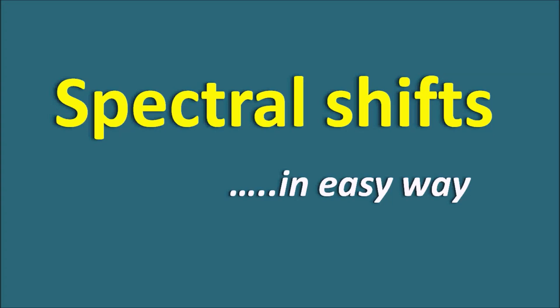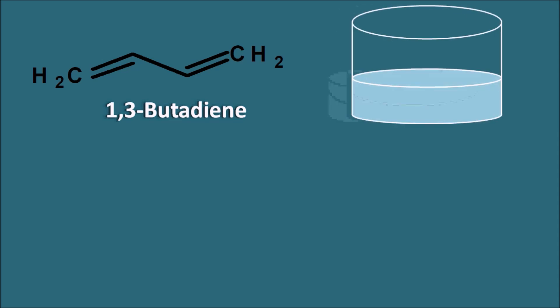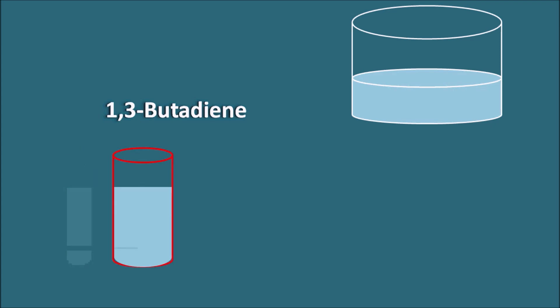Spectral shifts made easy. Let us take a simple compound like 1,3-butadiene. If this 1,3-butadiene is dissolved in a suitable solvent and placed in a spectrophotometer, and we send electromagnetic radiation with intensity I0, this radiation can pass through the solution and come out as It, where It is the intensity of the transmitted light. The solution absorbs electromagnetic radiation because of the sample 1,3-butadiene.